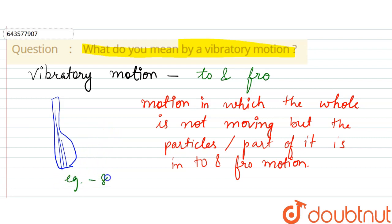the example of a swing. Like when you swing, that is a to and fro motion, right? But the whole system is not moving.